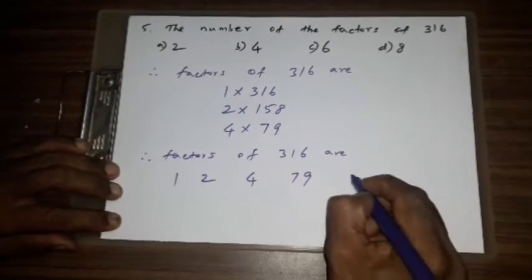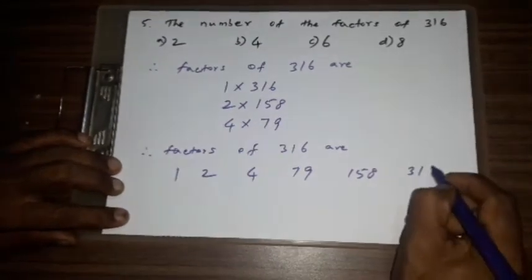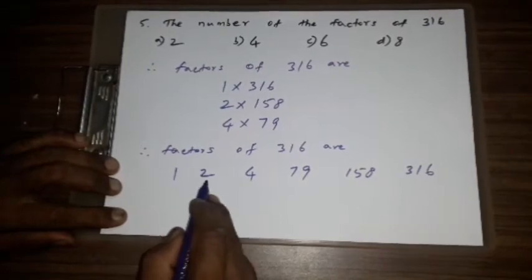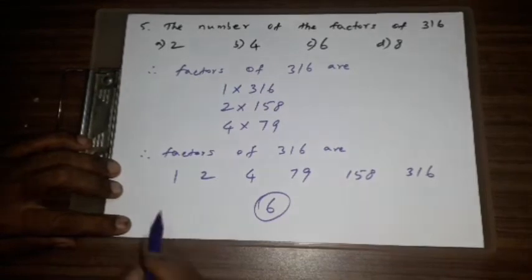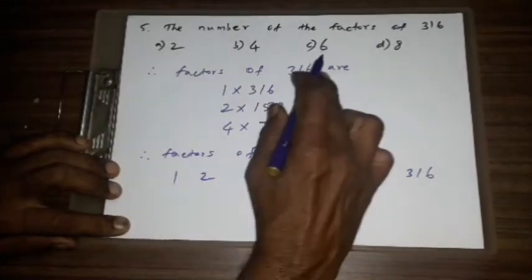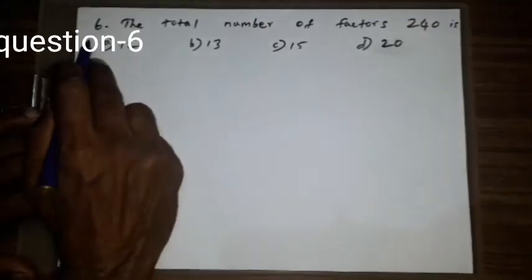So 1, 2, 3, 4, 5, 6. 6 is the correct answer. C: 6 is the correct answer.